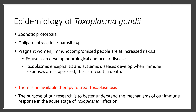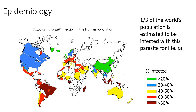Currently there is no therapy to treat toxoplasmosis, and the purpose of our research is to better understand the mechanisms of the immune system response in the acute stage of Toxoplasma infection so that future therapies can be developed. Toxoplasma gondii infection is widespread — it is estimated that one-third of the world's population is infected with this parasite for life.